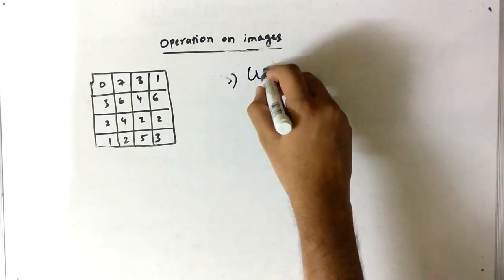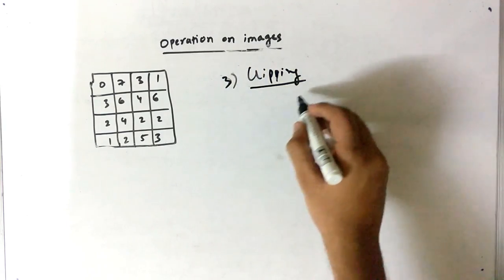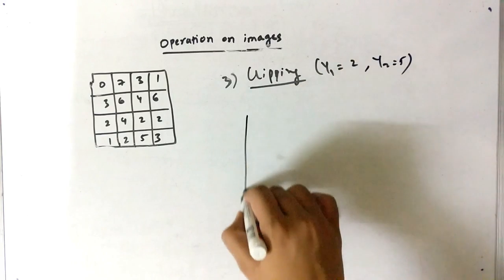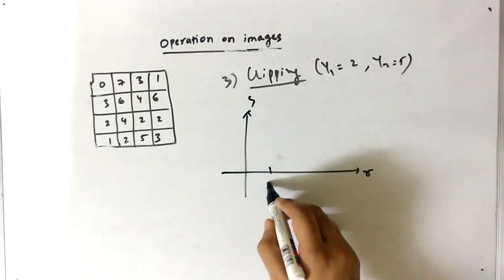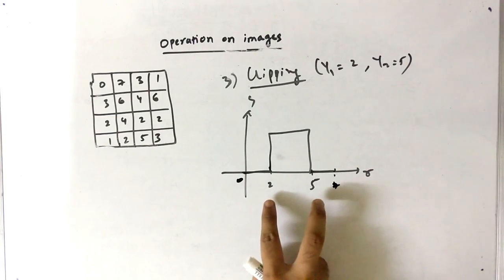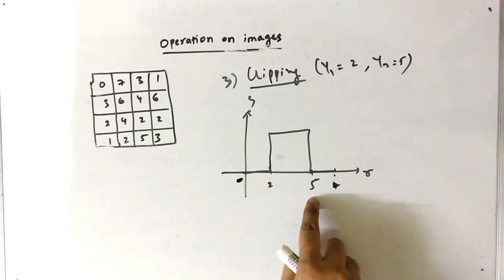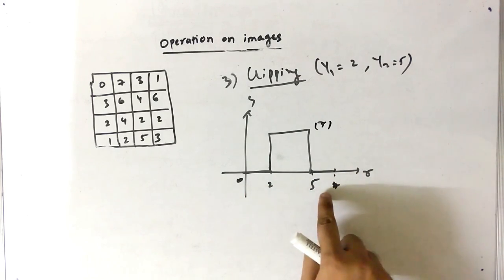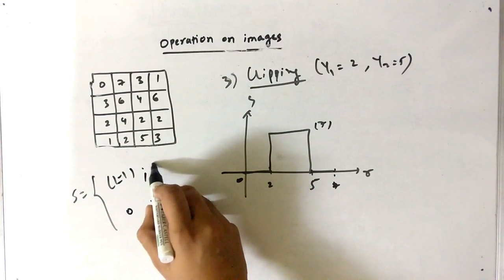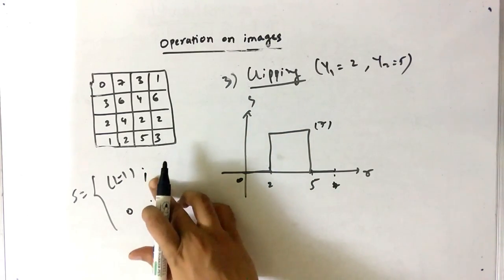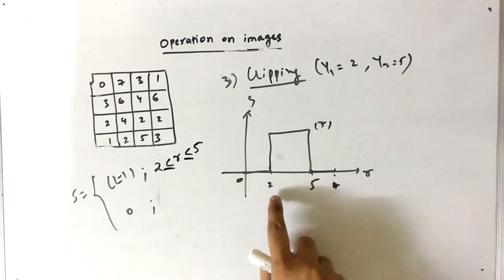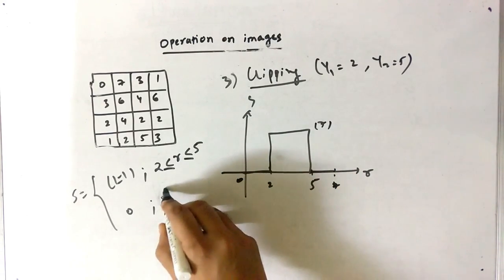Similar to thresholding, the next point is clipping. In the clipping operation, some range values are given — let's say 2 and 5. Between 2 and 5, the output should be maximum (7); otherwise it should be 0. So the range is: when R is greater than or equal to 2 and less than or equal to 5 (that is, 2, 3, 4, and 5), the output is 7; otherwise it is 0.